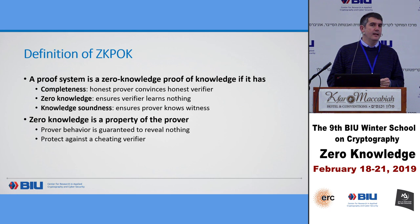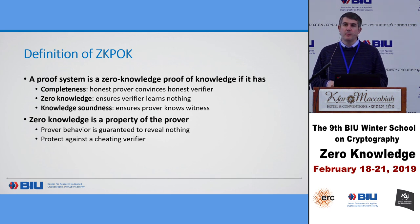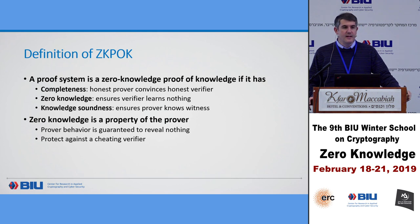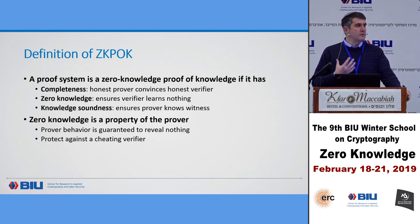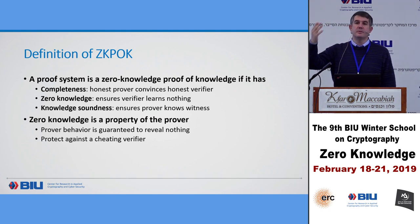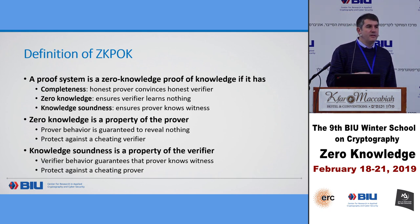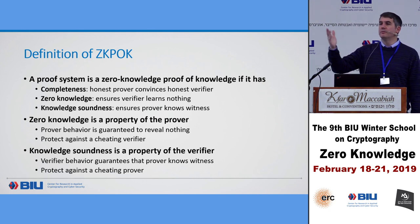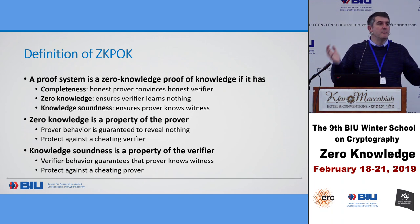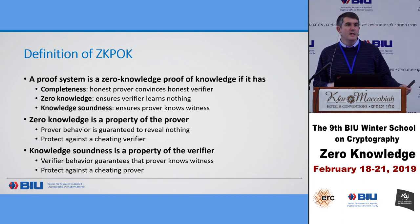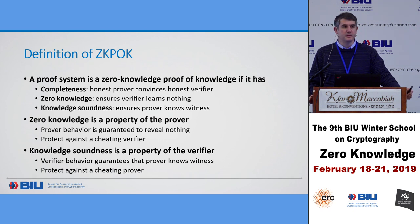Zero knowledge is a property of the prover. If we have an honest prover running the protocol, the verifier can't extract its secrets. Zero knowledge protects the prover against potentially cheating verifiers who want to extract its secrets. Knowledge soundness is actually a property of the verifier — it protects the verifier against a cheating prover. If the verifier runs the protocol honestly, it's protected even against cheating provers who arbitrarily claim to know something they don't.